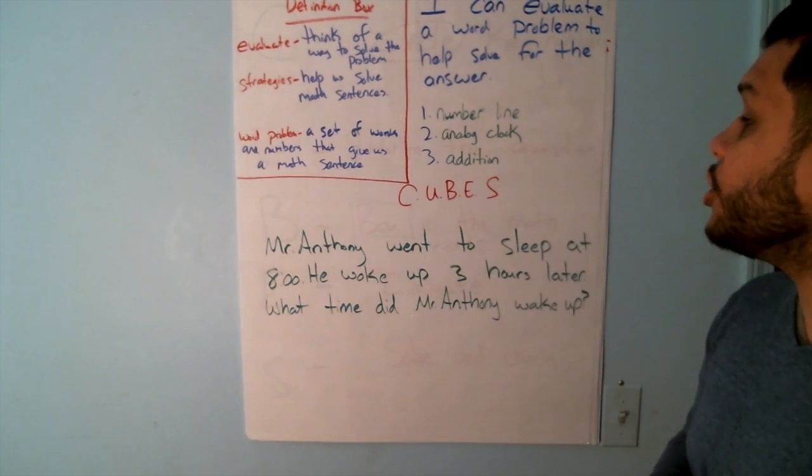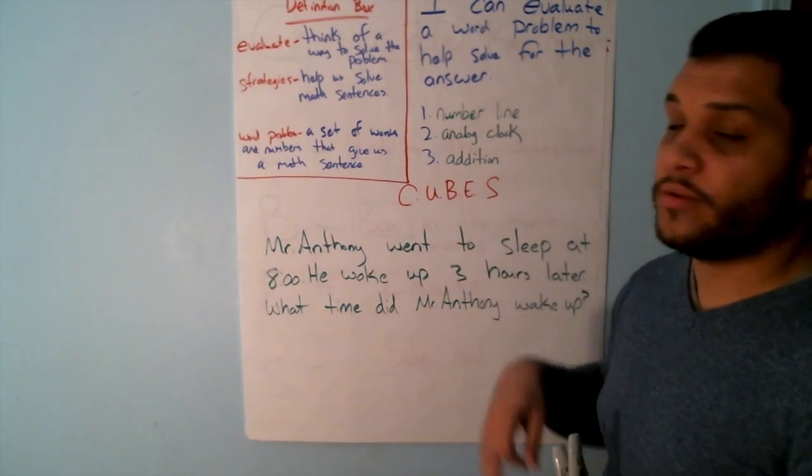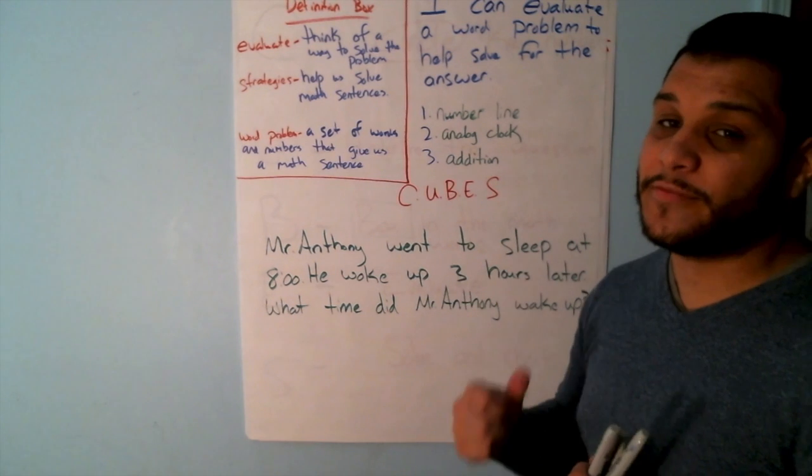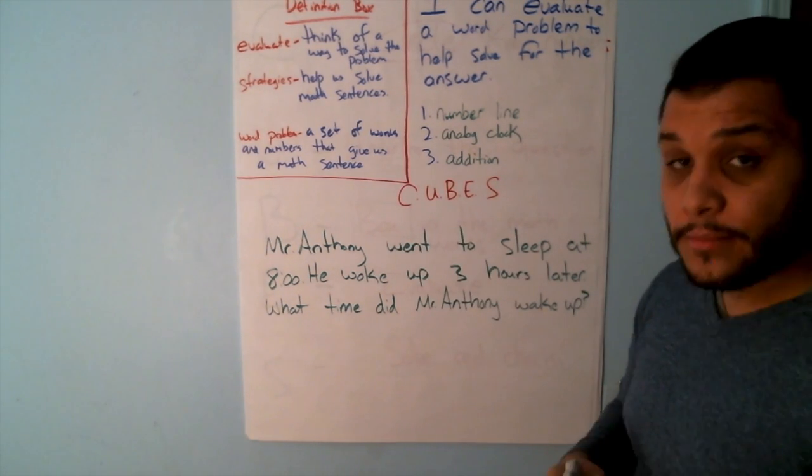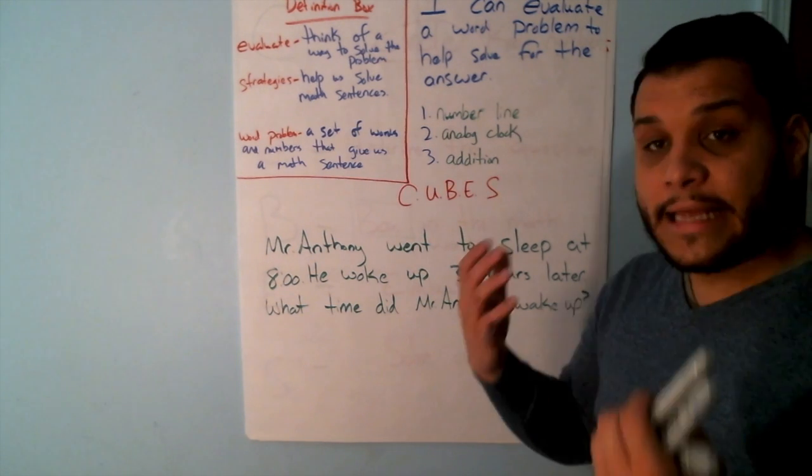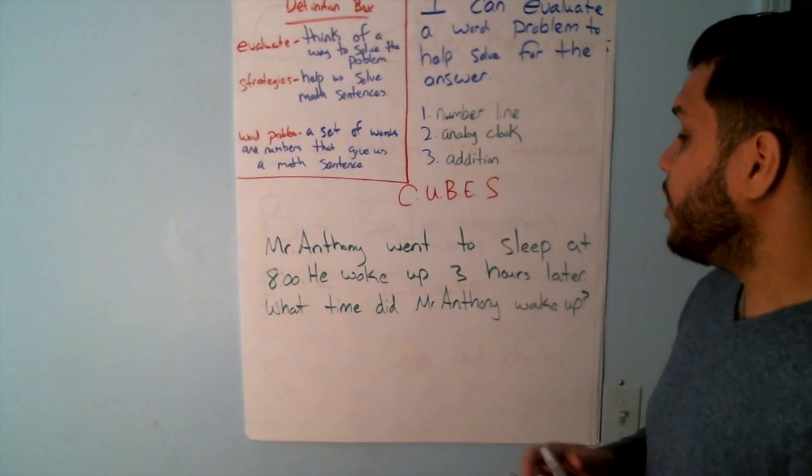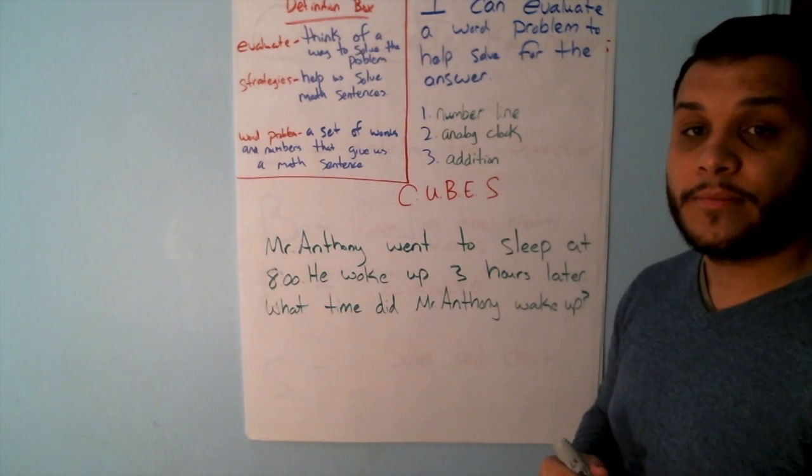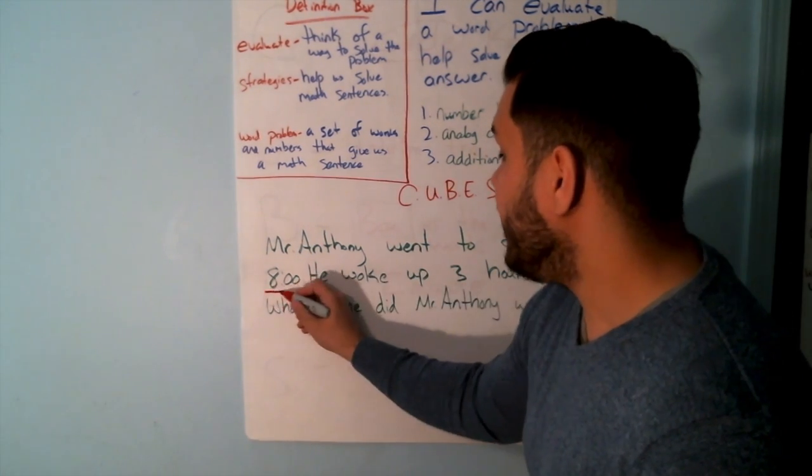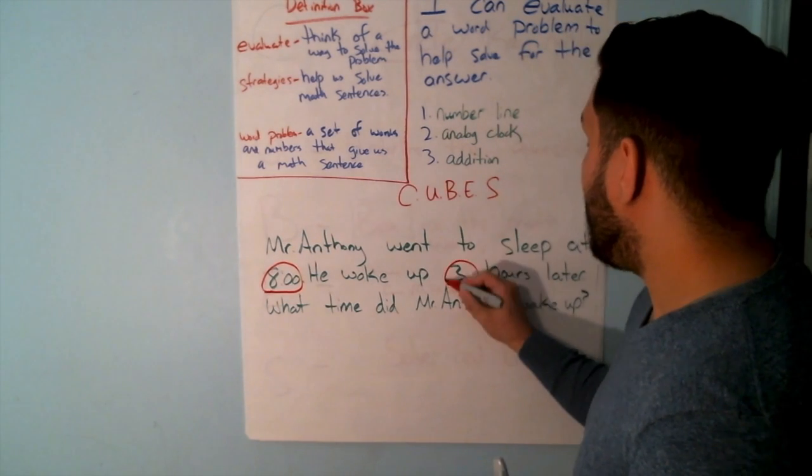Well, let's go through our cubes. You should know the first three. C stands for circle key numbers. What are my two key numbers on my word problem? Correct, eight and three.